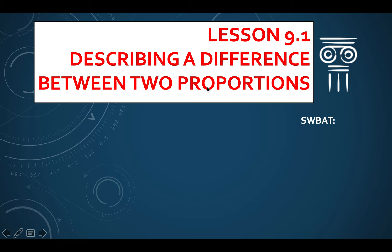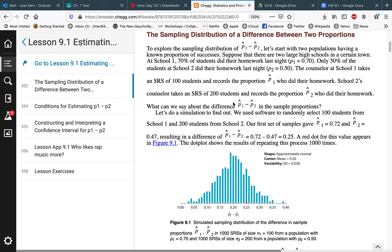What does it mean to have a difference between two proportions? We're also going to look at the difference between two means, but let's focus right now on the difference between two proportions. So let me give you an example of the type of data we're going to be working with — exploring the sampling distribution of p̂₁ minus p̂₂.